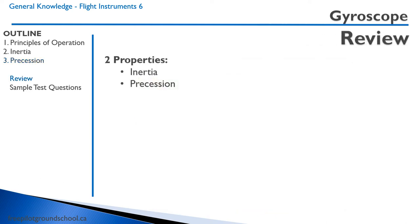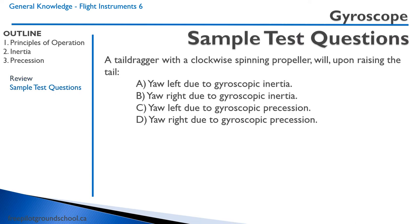The gyroscope has two properties: gyroscopic inertia and gyroscopic precession. Here's a sample question to let you apply what you just learned to a practical example. A tail dragger with a clockwise spinning propeller will, upon raising the tail: